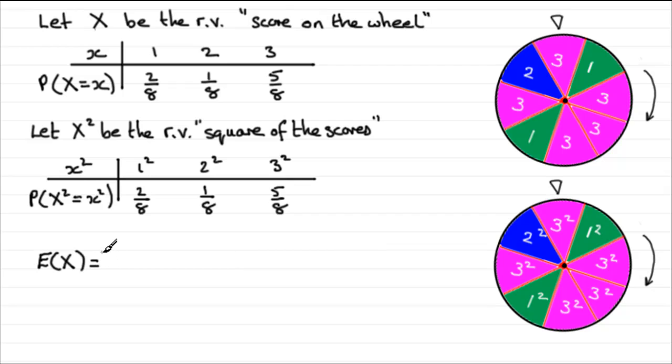We did that by doing the sum of x times the probability of getting that observed value. So if we were working out E(X) for this table, we would have done 1 times 2/8 plus 2 times 1/8 plus 3 times 5/8. That was E(X).